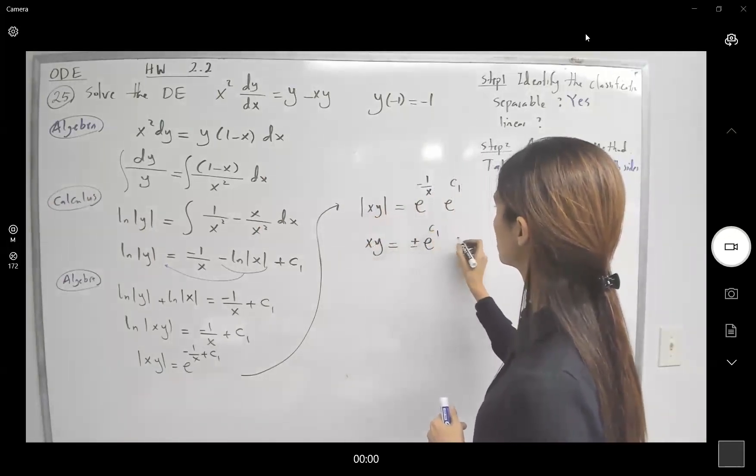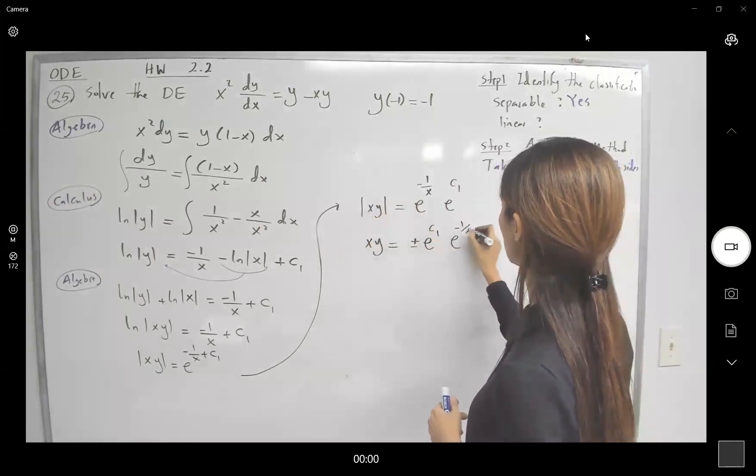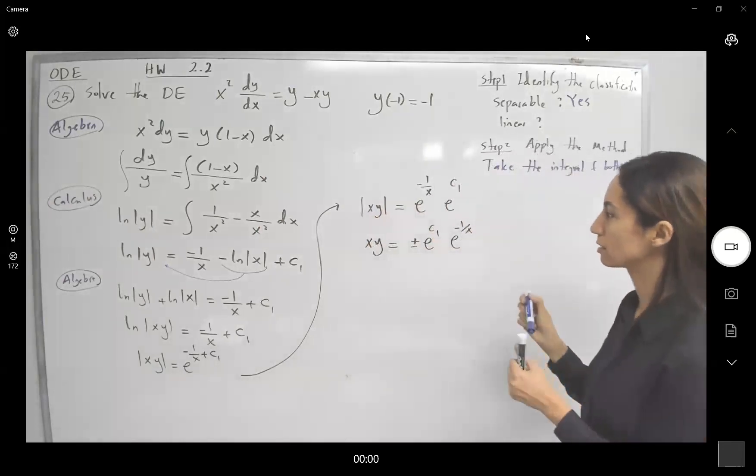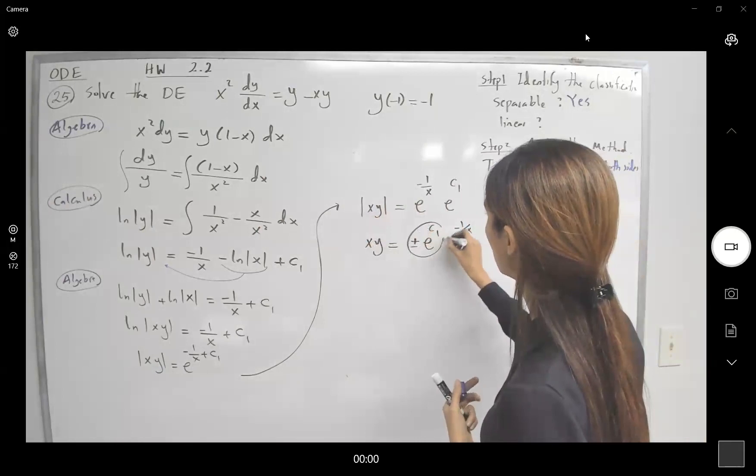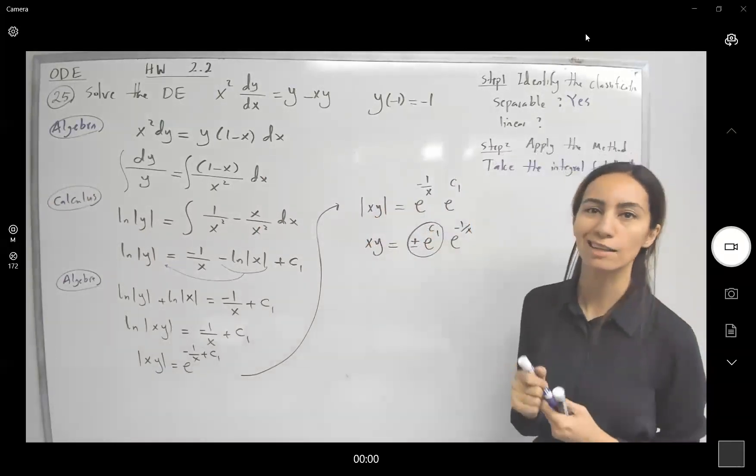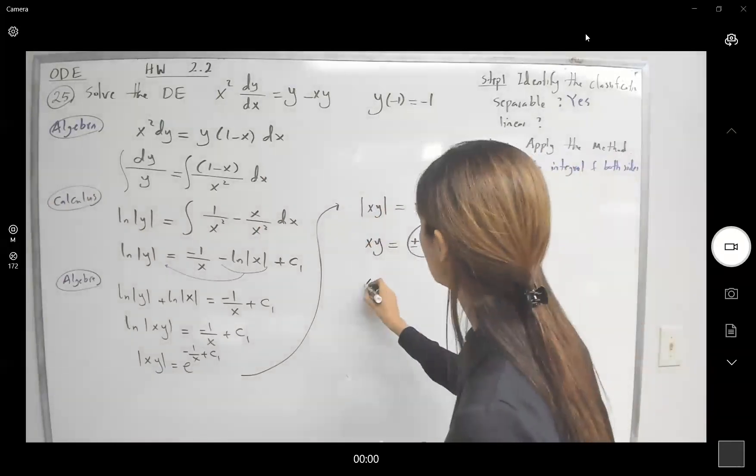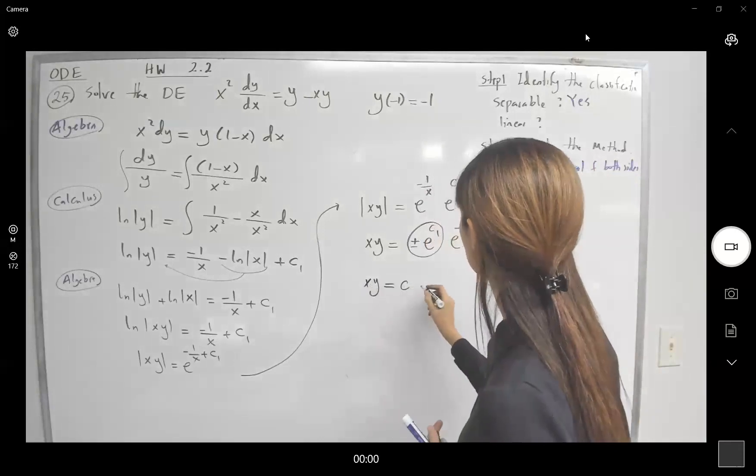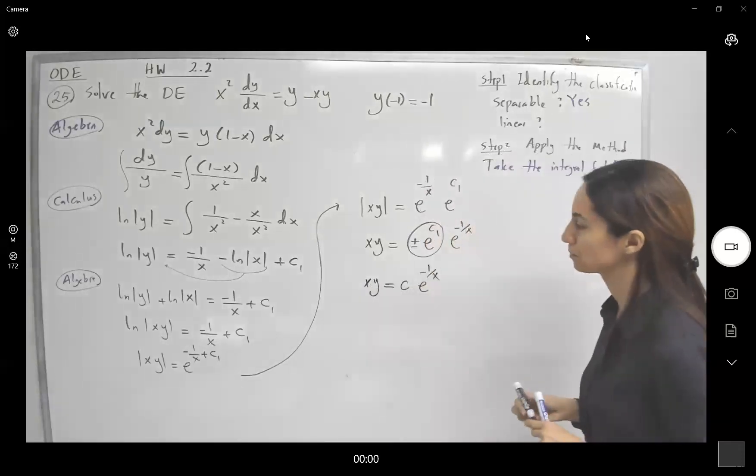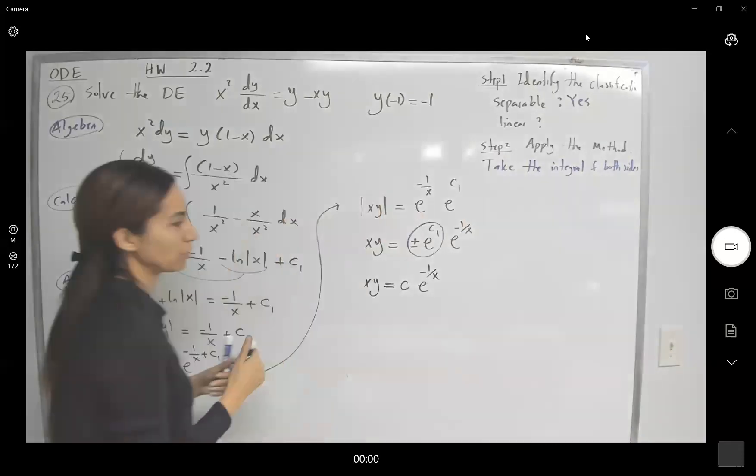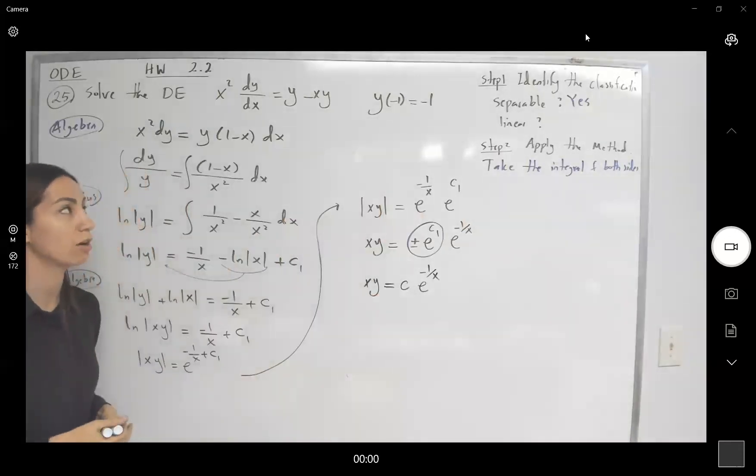So xy becomes plus or minus e to the power negative 1 over x times e to the c1. And let us just call this a new constant c. So xy is equal to c times e to the negative 1 over x. So it seems like we found the family of solutions of this differential equation.